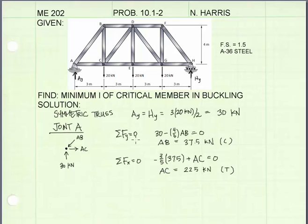Summing forces in the y direction equal to zero, we have a 30 kilonewton load pointing upward. Then we have member AB pointing downward, though at an angle. We can take advantage of the geometry here. It has a base dimension 3, height 4. That means the length of member AB is 5. To get the vertical component, we take 4 fifths AB equal to zero. We solve AB is equal to 37.5 kilonewtons.